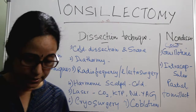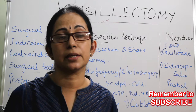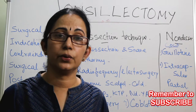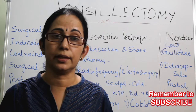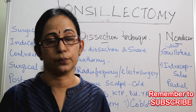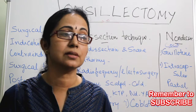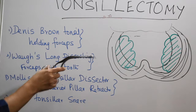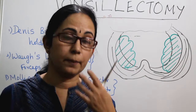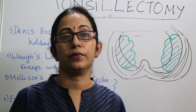Now I will describe the dissection and snare method. Anesthesia is general anesthesia with orotracheal intubation. For tonsillectomy alone in adults, nasotracheal intubation can also be used. Position is Rose's position. The mouth is opened with a Boyle-Davis mouth gag with a Dott's tongue blade, stabilized with a Draffin bipods and McIvor's plate. There are named instruments which may be asked in viva.